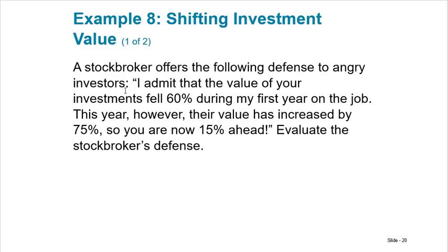A stockbroker offers this defense to angry investors: 'The value of your investments fell 60% during my first year, but this year their value increased by 75%, so you are now 15% ahead.' That's not true at all. If you started at $100 and lost 60%, you're down to $40. Then 75% of $40 is only $30, bringing you up to $70 — you're still 30% lower than where you started, not 15% ahead.